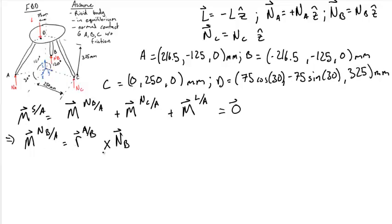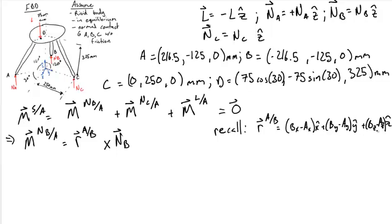To calculate the moment from force N_B about point A, you can take the position vector from A to B crossed with the force N_B applied at B. Recall the position vector from A to B is B_x minus A_x in the x-hat direction, plus B_y minus A_y in the y-direction, plus B_z minus A_z in the z-direction. This gives us that R_A to B is equal to, following this equation,